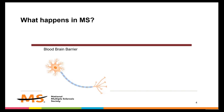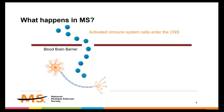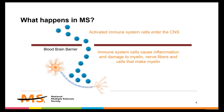The blood-brain barrier consists of specialized blood vessels that restrict many substances from entering the CNS. In MS, activated immune cells cross into the central nervous system through the blood-brain barrier. Once there, those immune cells cause inflammation and damage to myelin, nerve fibers, and the cells that make myelin. This damage interferes with smooth transmission of nerve impulses, leading to the symptoms of MS.